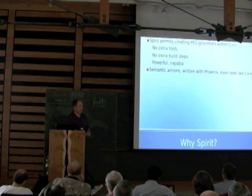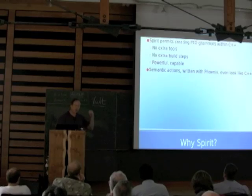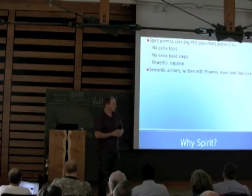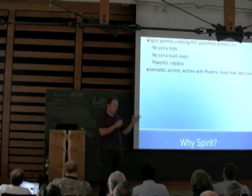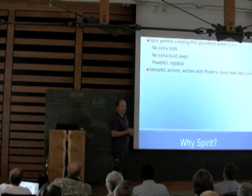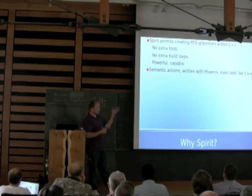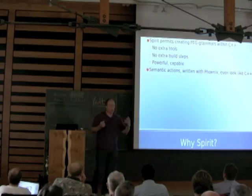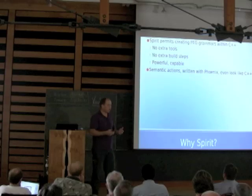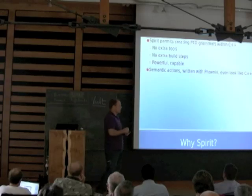Why Spirit? It's a very powerful library for creating parsing expression grammars. If you know EBNF — Extended Backus-Naur Form — grammars, then you've got a pretty good feel already for PEG grammars. You can go to Wikipedia to find a good deal of information on the syntax. One of the advantages of it being in C++ is you don't need any extra tools. You don't have to incorporate Lex and Yacc or any other tools into your tool chain. You write it all right within the same source file as any other C++ code. It's kind of magical in that way.